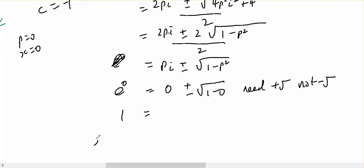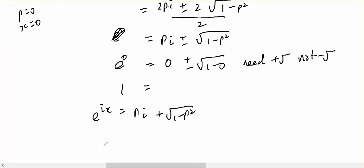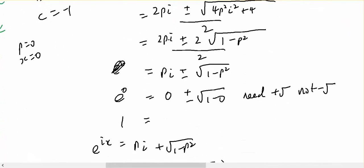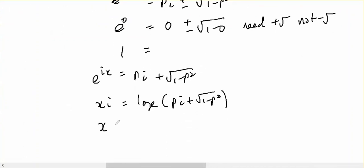I've got e to the ix equals pi plus the square root of 1 minus p squared. Therefore, ix equals log base e of pi plus the square root of 1 minus p squared. Always keep in mind what you're looking for. So x equals 1 over i log base e of pi plus the square root of 1 minus p squared.